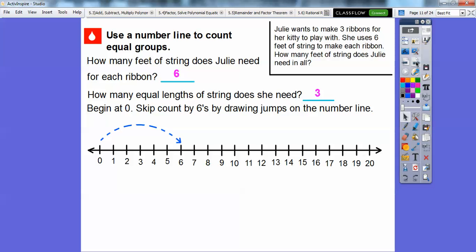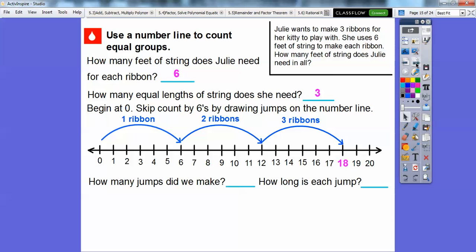So what we're going to do is start at zero. And we're going to skip count by sixes for the six feet by drawing jumps on the number line. So here's six feet right there. And that would make one ribbon. We're going to do it for three times because she's making three ribbons. So there's another ribbon. And there's another ribbon. So three ribbons is going to jump all the way out to 18 feet. Six plus six plus six right there.